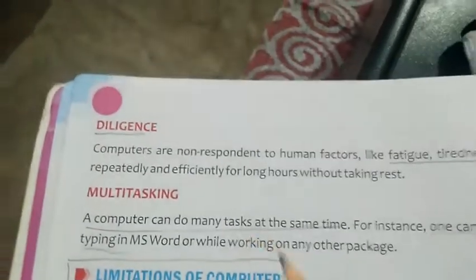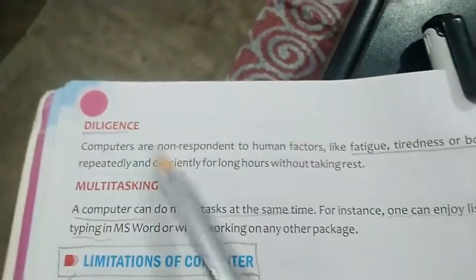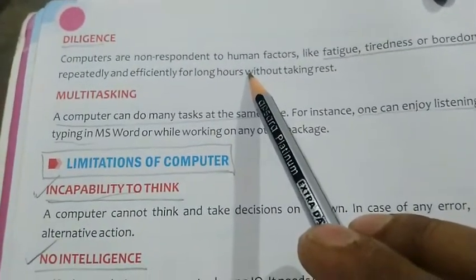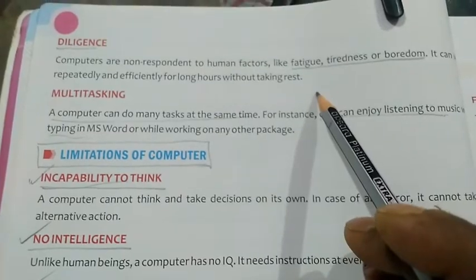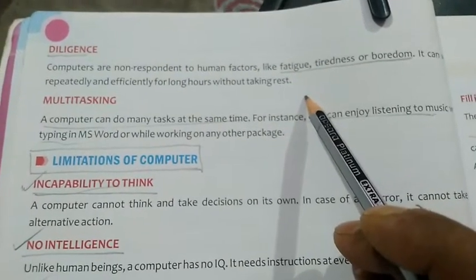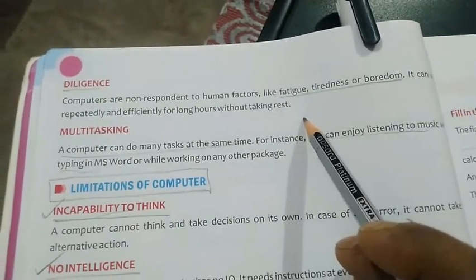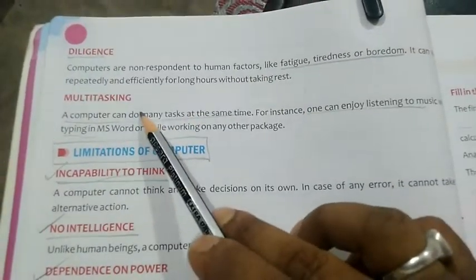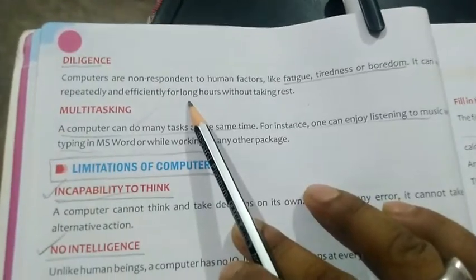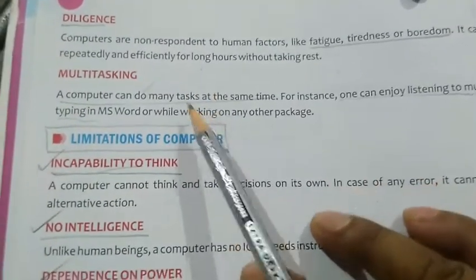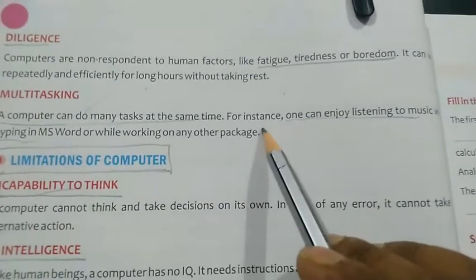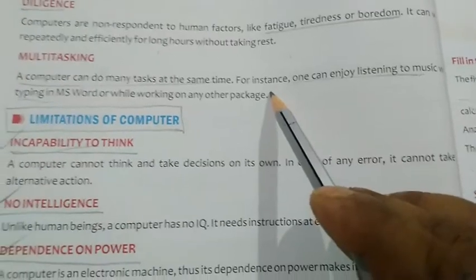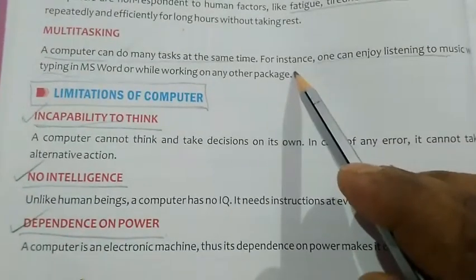Next is diligence. Diligence means a computer can work 24 hours without getting tired. As human beings feel sleepy at night, a computer can work long hours without getting tired. Next is multitasking — a computer can perform many functions at the same time, like listening to music while doing other work simultaneously.